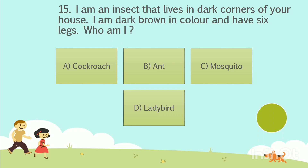Question No. 15: I am an insect that lives in dark corners of your house. I am dark brown in color and have six legs. Who am I? Option A: Cockroach. Option B: Ant. Option C: Mosquito. Option D: Lady Bird. Your time starts now. The answer is Option A: Cockroach.